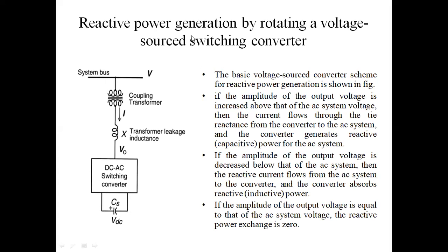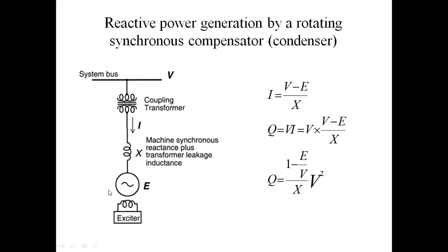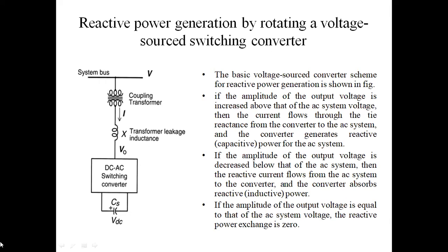Next, Reactive Power Generation by a Rotating Voltage Source Switching Converter. In the previous circuit, a synchronous generator or synchronous machine was used as a compensator. Here, a capacitor (VDC) is used for the start curve. V is the transmission line voltage, this is the coupling transformer, and I is the current flowing in the circuit. X is the transformer leakage inductance. This voltage source converter converts DC to AC when sending reactive power, and AC to DC when absorbing reactive power. This is the basic voltage source converter scheme for reactive power generation.